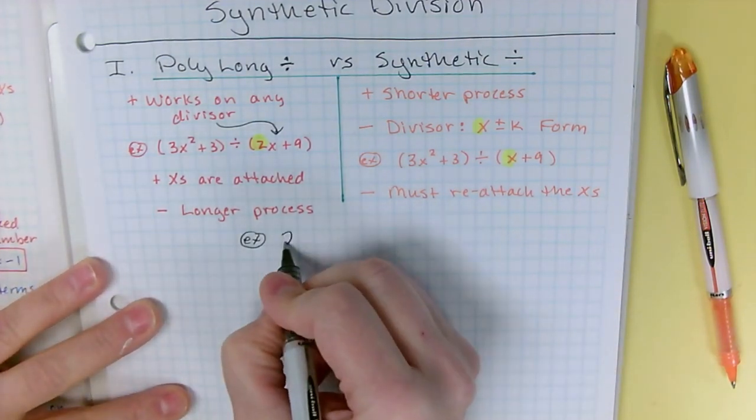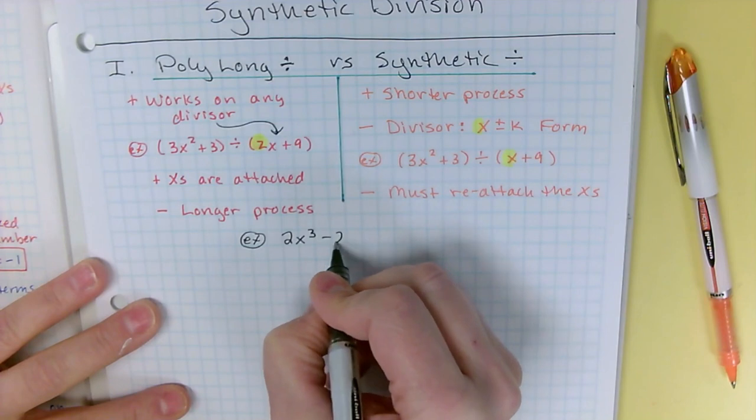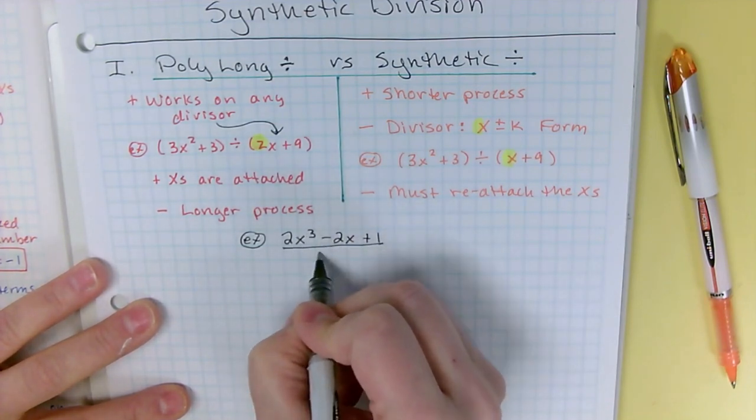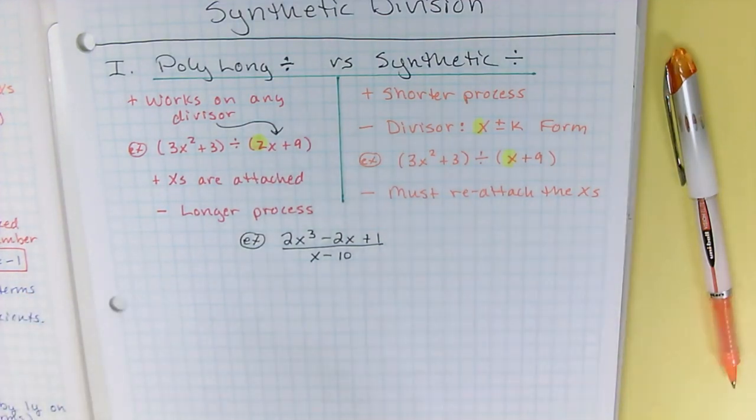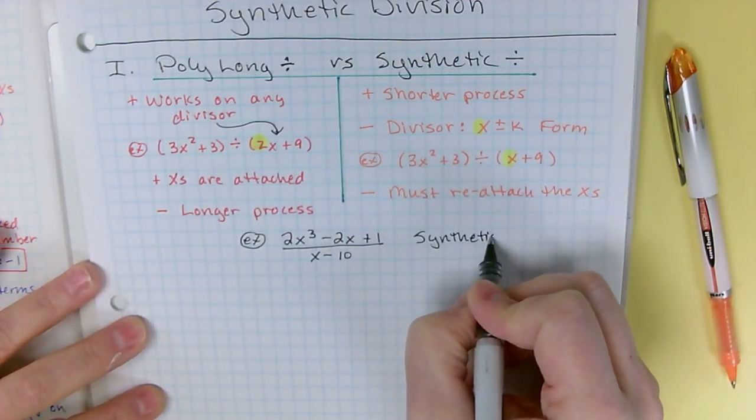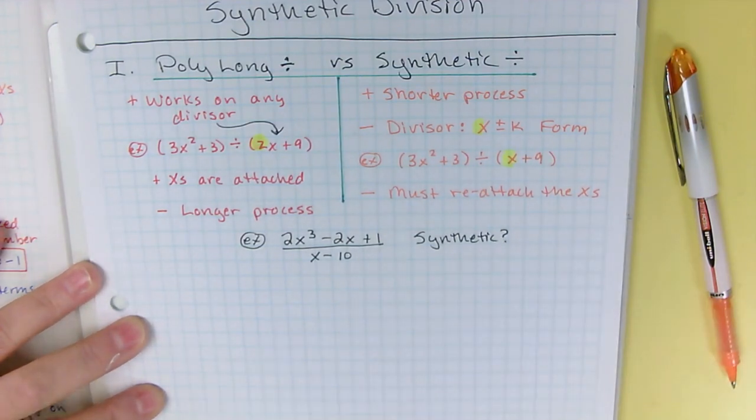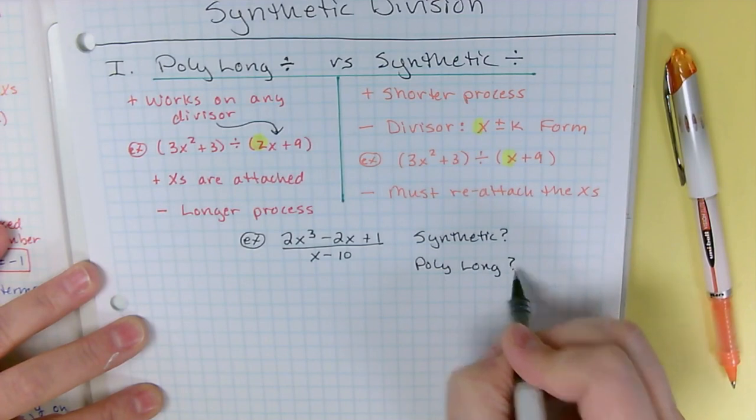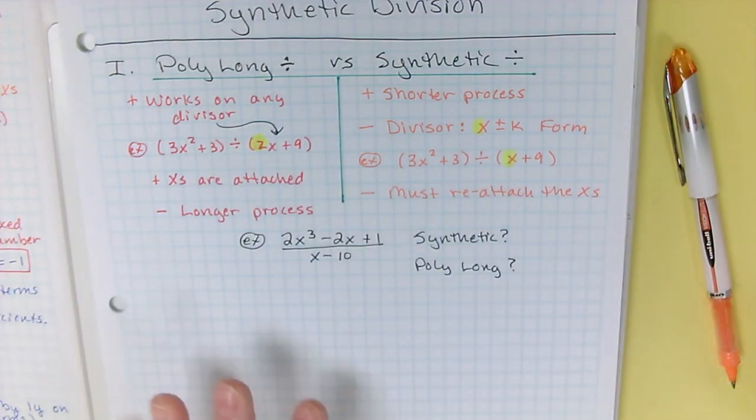So let's see if you've got this. Let's say you've got 2x³ - 2x + 1 divided by x - 10. And the question I'm going to ask you is would you want to do synthetic? Can you do synthetic? Or would you want to do poly long? Can you do poly long? That's the question.